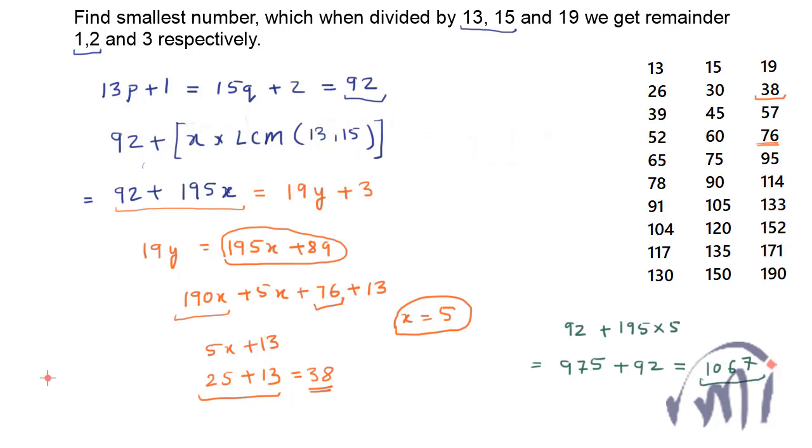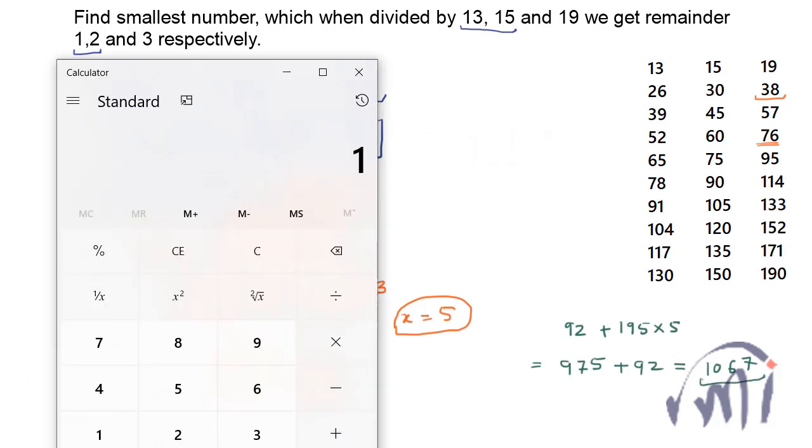So let us check it using the calculator. 1067 when divided by 13 you get remainder 1 that means 1067 minus 1 that is 1066 should be completely divisible by 13. Yes it is. And 1067 minus 2 that is 1065 should be divisible by 15. Yes. And 1067 minus 3 because you get remainder 3 when you divide it by 19 should be divisible by 19. Yes.